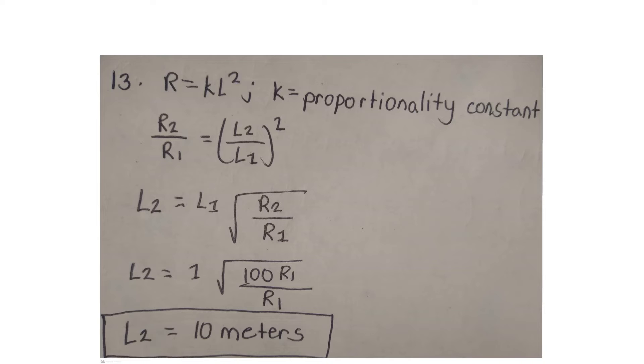And the only thing we need is to substitute the given value to the formula. And then L final length is equal to 1 times the square root of 100 times R1 over R1.